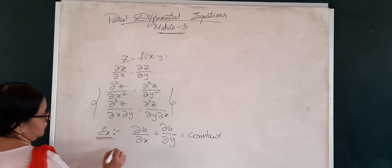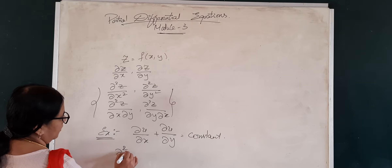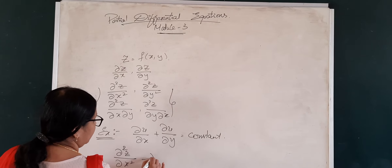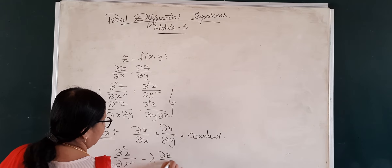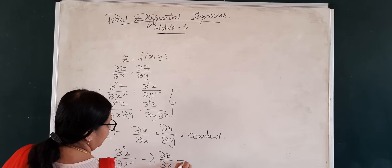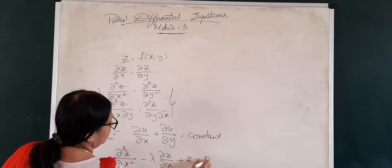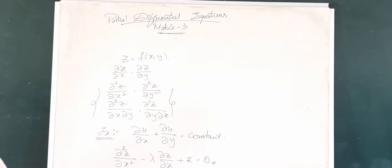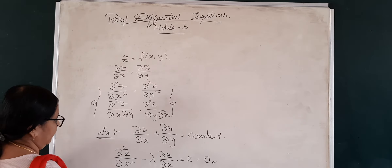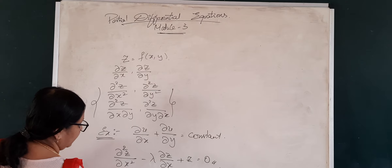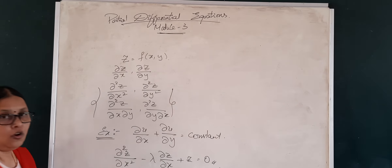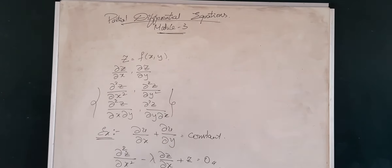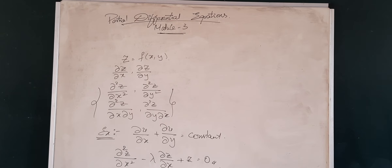We can also have higher order partial derivatives. For example, dou square z by dou x square minus some constant lambda times dou z by dou x plus z equals z — this involves a derivative with respect to only one variable. And dou square z by dou y, with respect to both variables, where z equals x times y — this is also one of the partial differential equations you can consider.